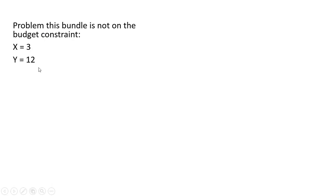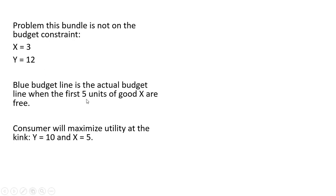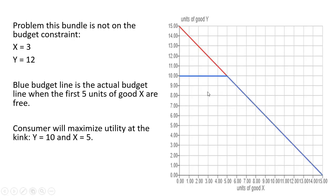The problem here is that this bundle is not on the actual consumer's budget constraint. X equals 3 and Y equals 12 is a point the consumer cannot afford — it lies above the actual budget line. So in that case, the consumer will maximize utility at the kink, which is Y equals 10 and X equals 5.